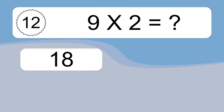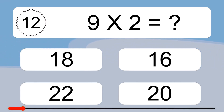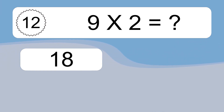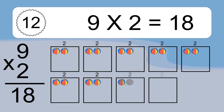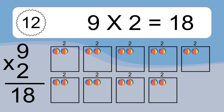9 times 2 equals what? 9 times 2 equals 18. We have 9 boxes, and each box has 2 colorful balls inside. If you count all the balls in all the boxes together, you will have 9 times 2 balls. This equals 18 balls.